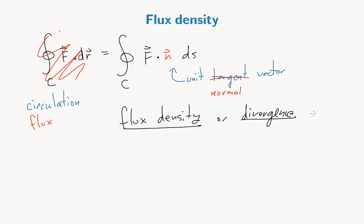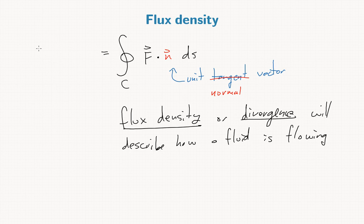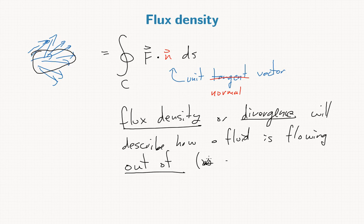So this will describe how a fluid is flowing. So if we have this is our vector field, and we have some region, the divergence will describe how a fluid is flowing out of, so in or out of, as opposed to how it's flowing around. So circulation is about how it's flowing around the edge of a region. Divergence is about how it's flowing out of a region.